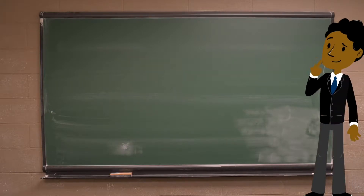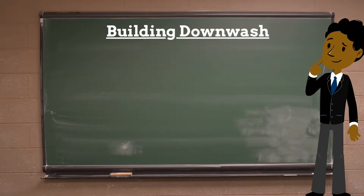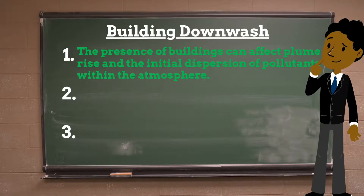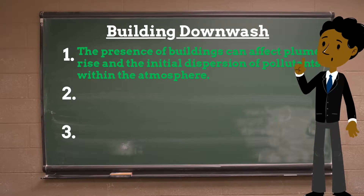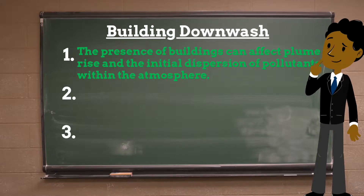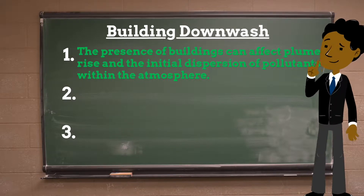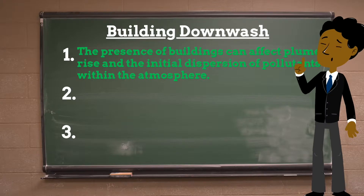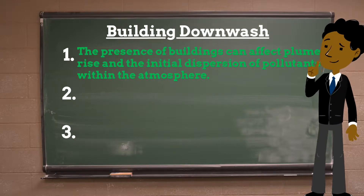Today we will be discussing building downwash. The presence of buildings can affect plume rise and the initial dispersion of air pollutants within the atmosphere. Turbulent wake zones can be created around buildings that force pollutants to the ground instead of allowing them to rise freely. Building downwash occurs as the wind flows over and around buildings and impacts the dispersion of pollution from nearby stacks.